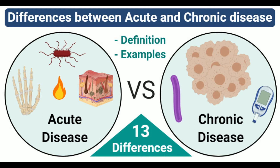In addition to the sudden onset of the disease, acute diseases also worsen more rapidly than chronic conditions. Acute diseases might affect or occur in all systems throughout the body, but they only affect just one system at a time. The treatment associated with acute diseases also differs depending on the nature of the disease.